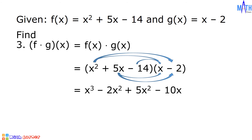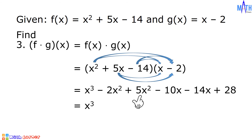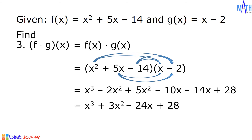Negative 14 times x equals negative 14x, and negative 14 times negative 2 equals positive 28. Let us combine similar terms. We have x cubed. Negative 2x squared plus 5x squared is equal to positive 3x squared. Negative 10x minus 14x equals negative 24x plus 28. And this is the product: x cubed plus 3x squared minus 24x plus 28.